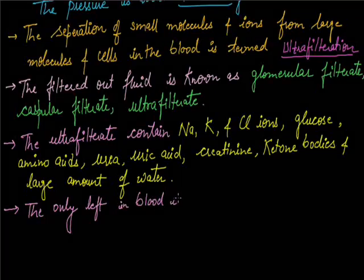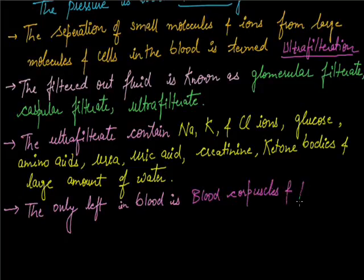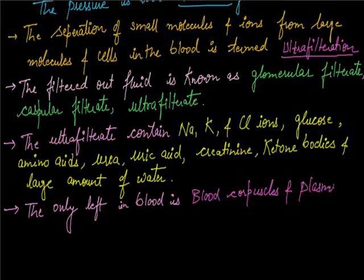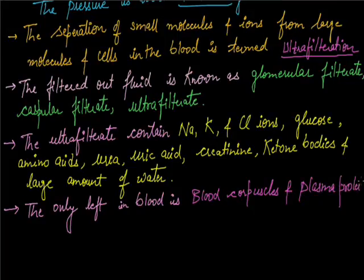The only components left in blood are blood corpuscles and plasma proteins. Their size is bigger so they cannot pass into the filtrate. This is all about glomerular filtration.